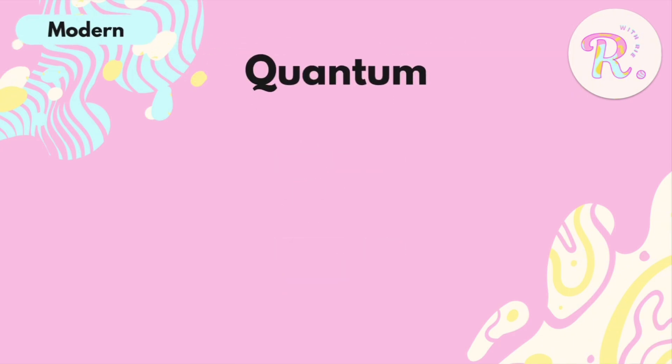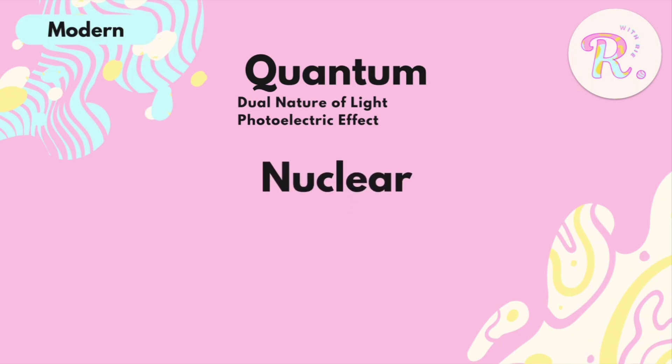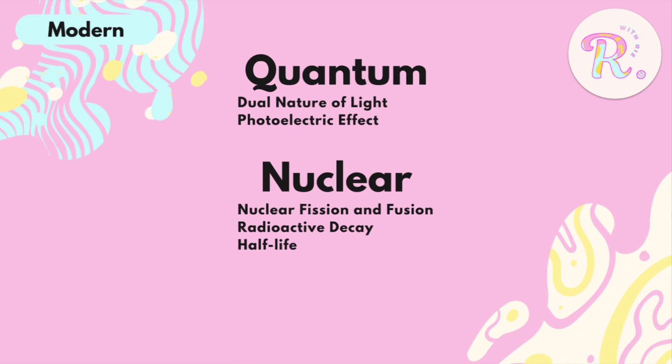Moving on to modern physics — in quantum physics we have the dual nature of light, that light is both a wave and a particle, as well as Einstein's equation on the photoelectric effect. In nuclear physics we have nuclear fission and fusion, the difference between the two, radioactive decay and half-life — which also appears in chemistry. In radioactive decay, you just need to be acquainted with alpha, beta, and gamma decay, as well as half-life and decay equations.